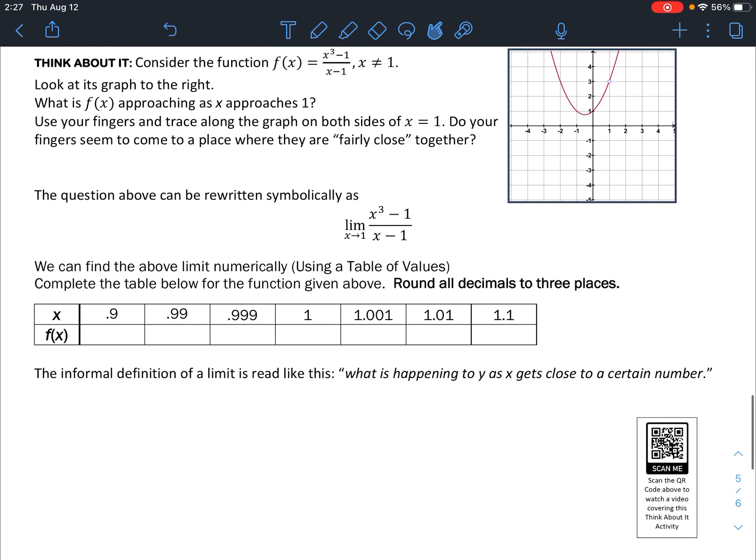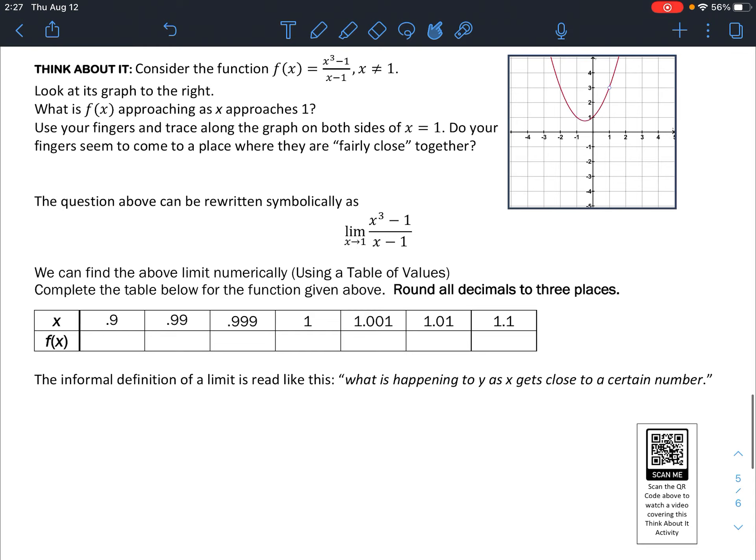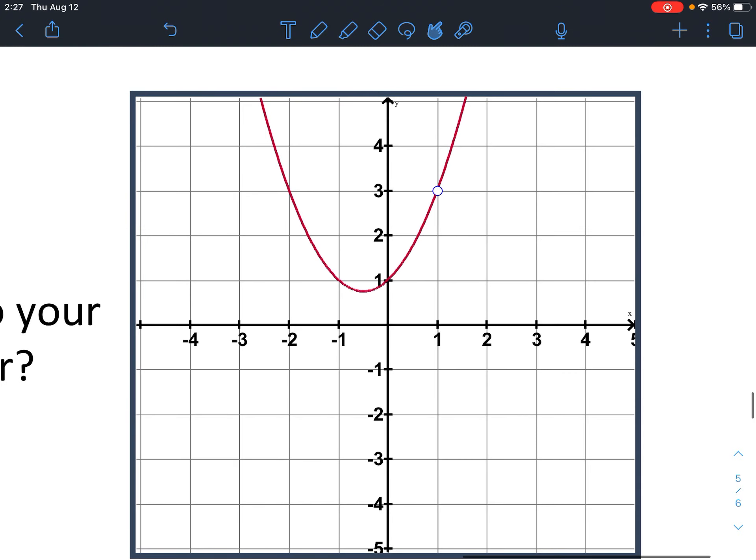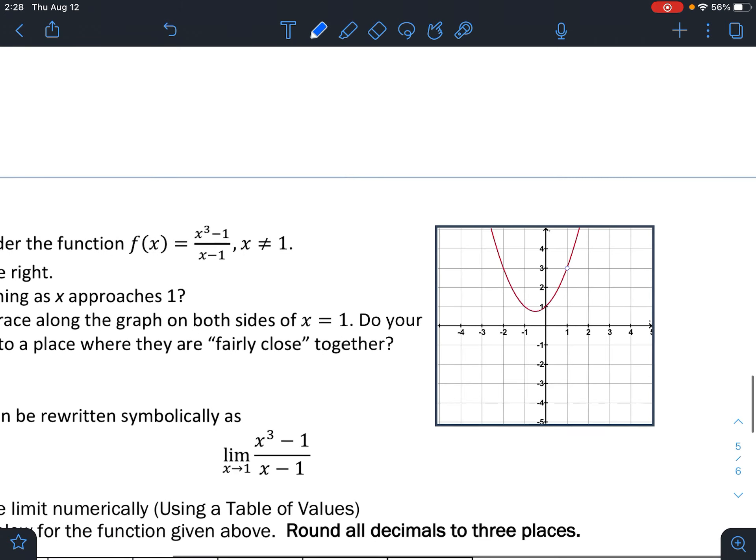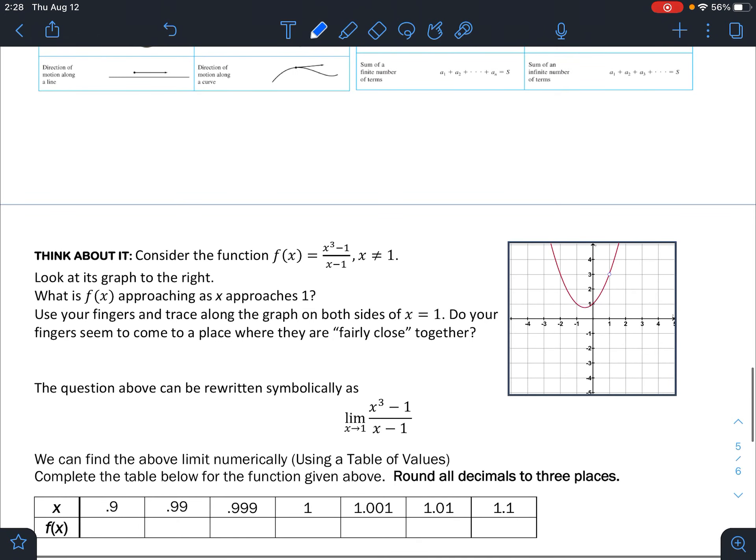The next one here says, consider this function at the right over there. Look at the graph to the right. What is the function approaching as x approaches 1? Take your finger and slide it from the left to approach 1 and slide it from the right to approach 1. Are those approaching the same number? And the answer, pretty obviously, should say yes. It looks like they're approaching 3. Both sides are approaching the same side as they approach x equals 1.